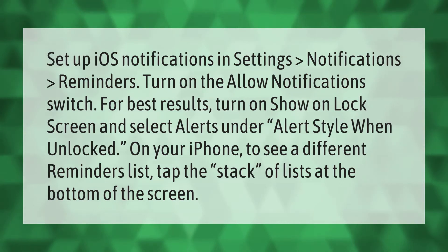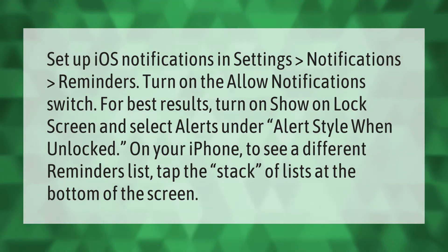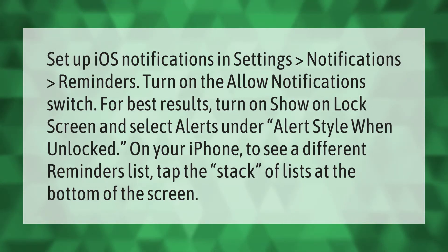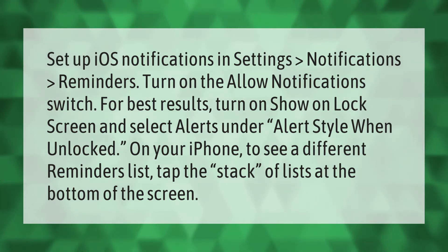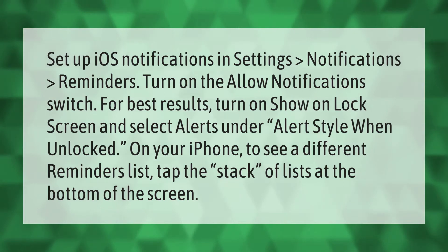Set up iOS notifications in Settings > Notifications > Reminders. Turn on the Allow Notifications switch. For best results, turn on Show on Lock Screen and select Alerts under Alert Style When Unlocked on your iPhone. To see a different Reminders list, tap the stack of lists at the bottom of the screen.